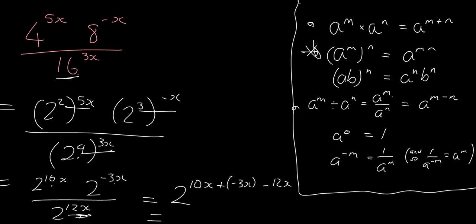So 10x minus 3x is 7x, and 7x minus 12x is minus 5x. And if they wanted us to write it with positive exponents, we'd have to say 1 over 2 to the 5x.